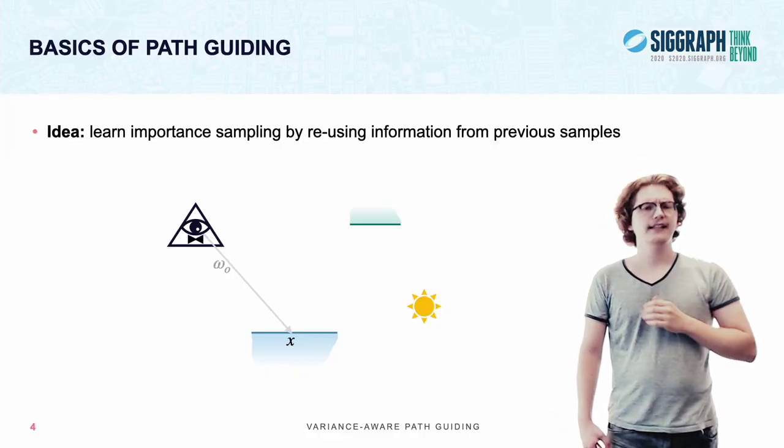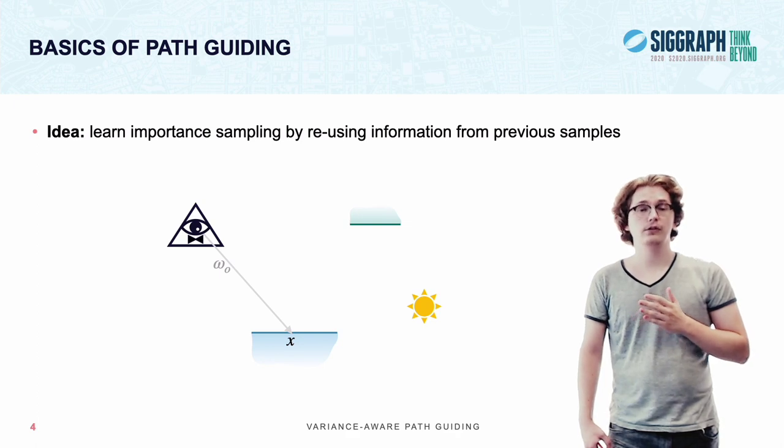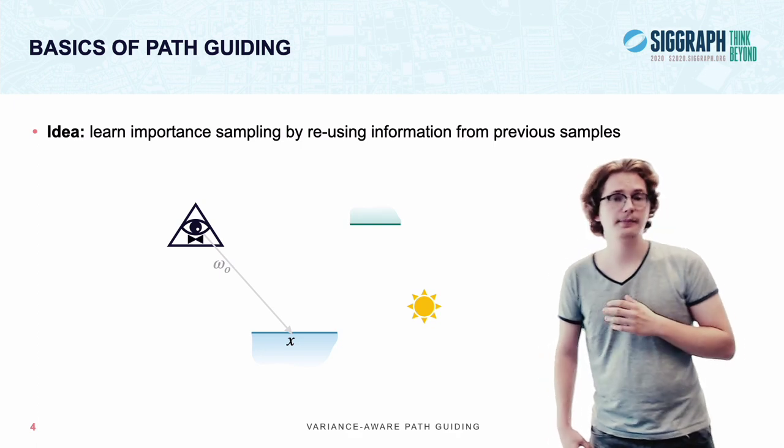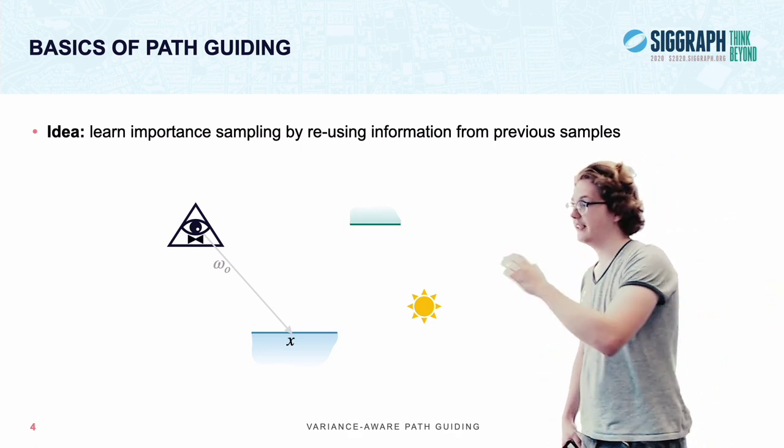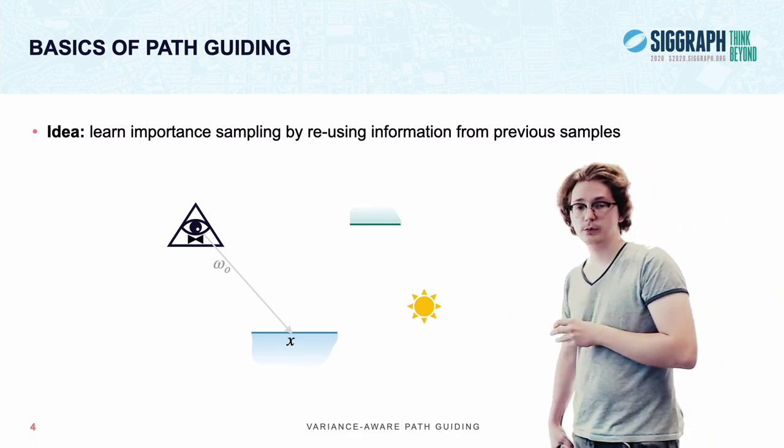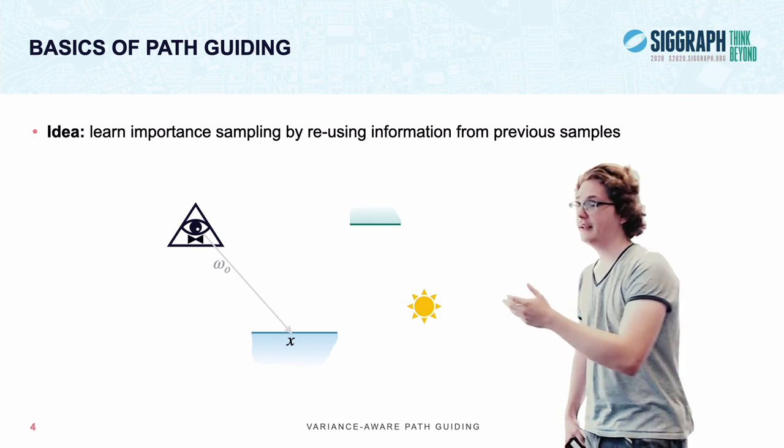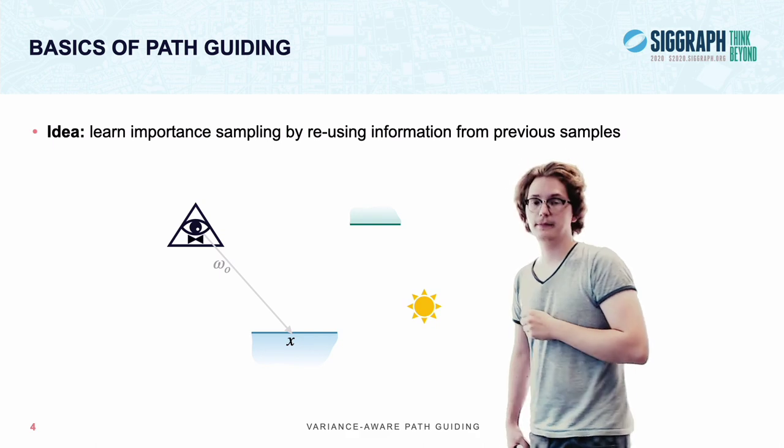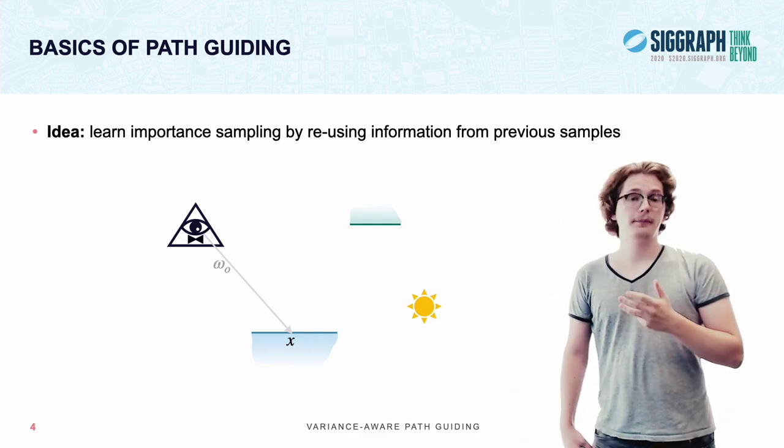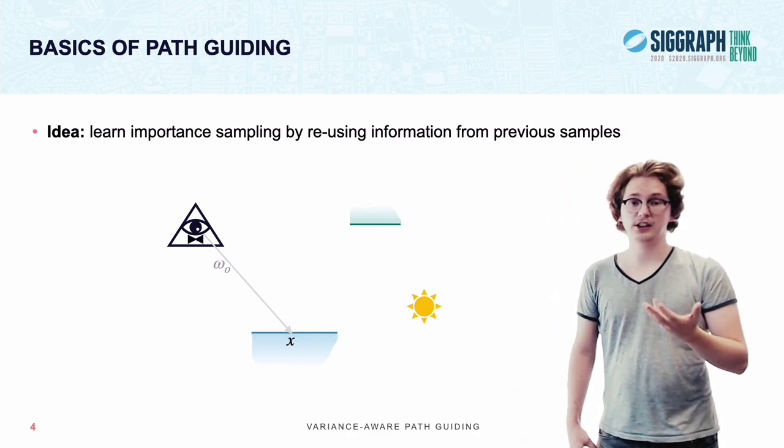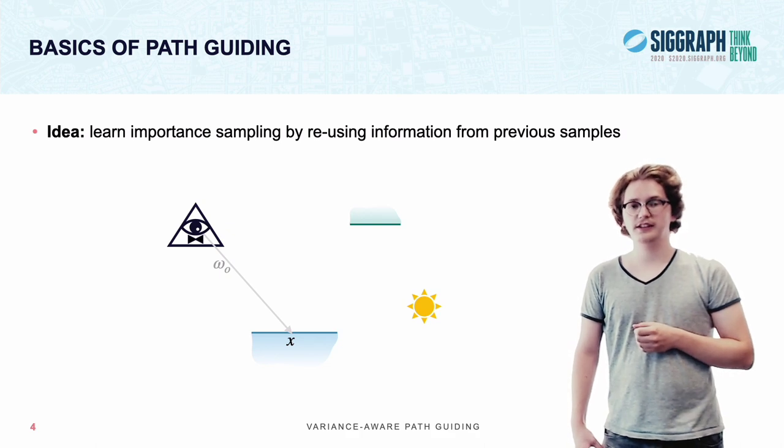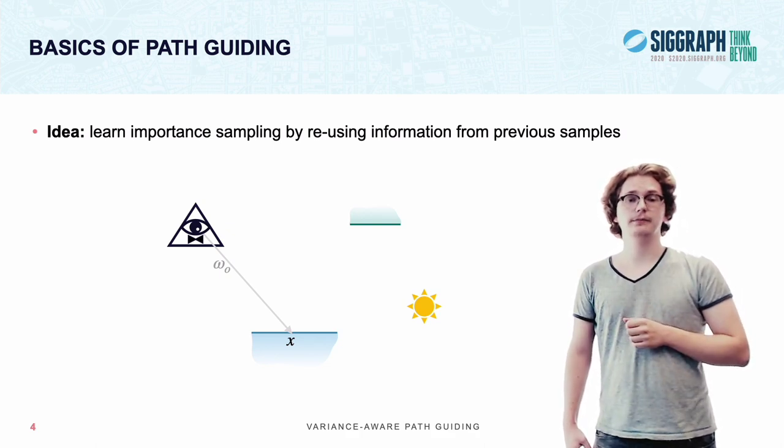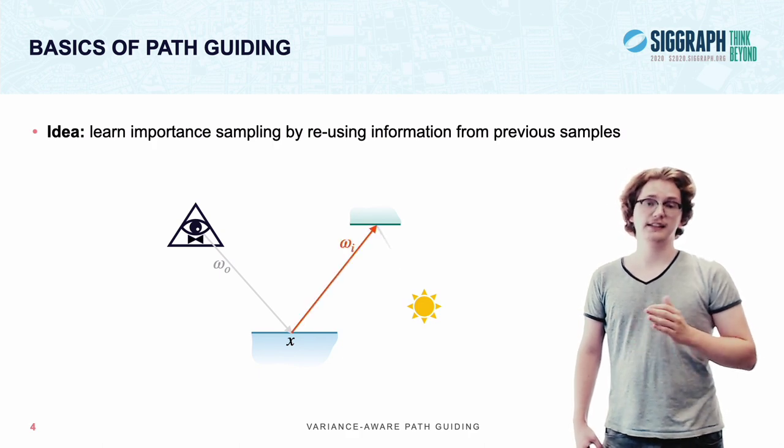Now, path guiding is based around the idea that you want to learn your importance sampling from samples that you've seen earlier. Consider the scene depicted here. We've got a camera that's looking at an object which is illuminated both directly by the light source, as well as indirectly through another object. Now what path tracing would do to estimate how much light is being reflected towards our camera is, it would shoot rays in random directions, hoping to find a light source at some point.